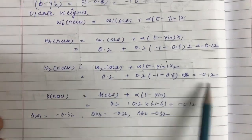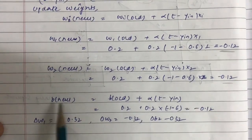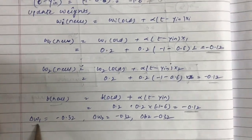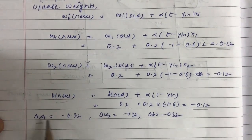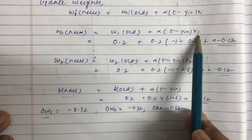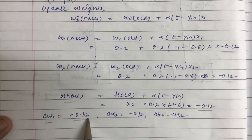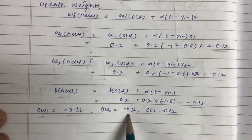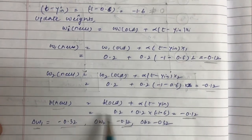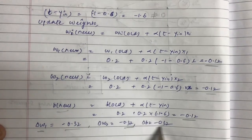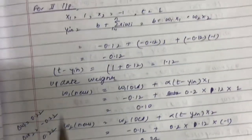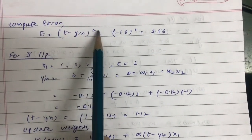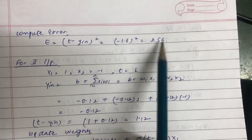b(new) also comes out to be −0.12. Now delta_w1 = alpha * (t − y_in) * x1 = −0.32, delta_w2 = alpha * (t − y_in) * x2 = −0.32, and delta_b = alpha * (t − y_in) = −0.32. The error = (t − y_in)² = (−1.6)² = 2.56.